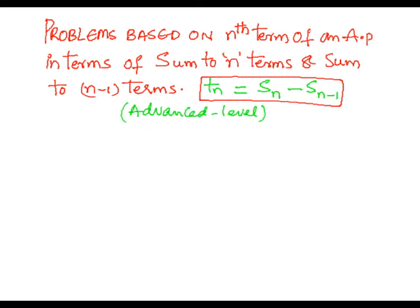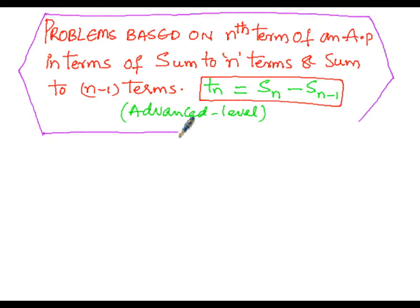The formula for finding the nth term of an AP is a plus n minus 1 into d, whereas the sum of n terms when first term a and common difference d are known is given by S(n) equals n by 2 into 2a plus n minus 1 into d.